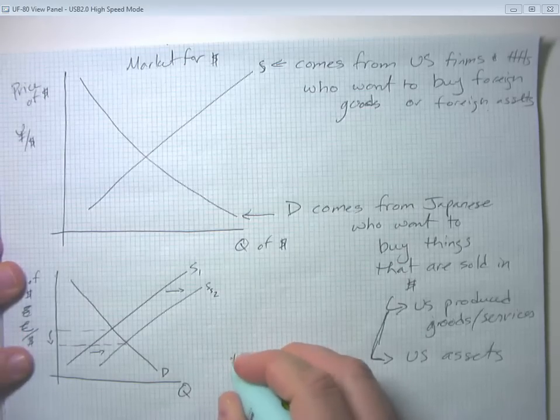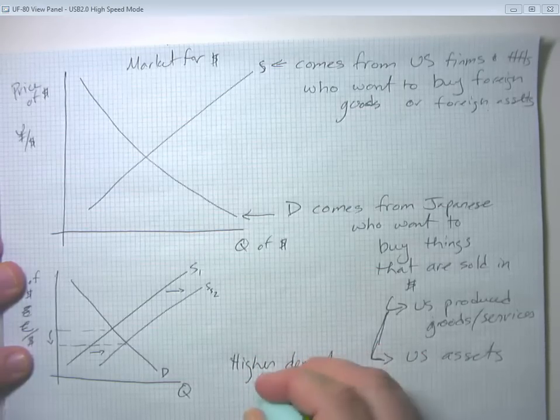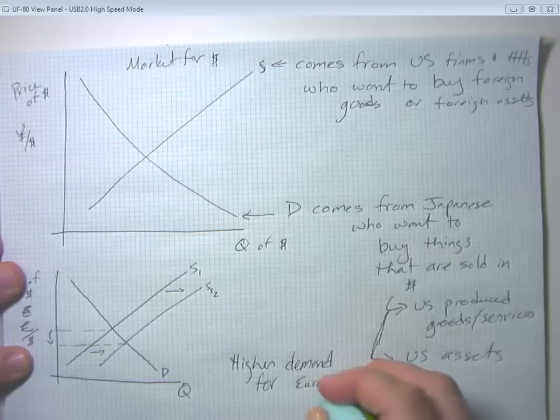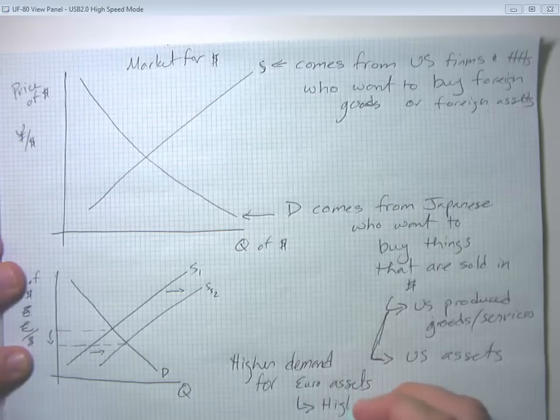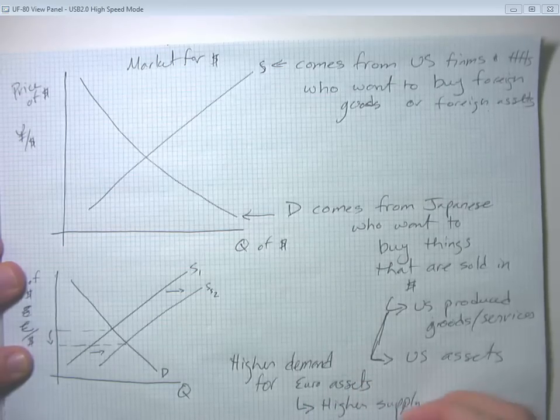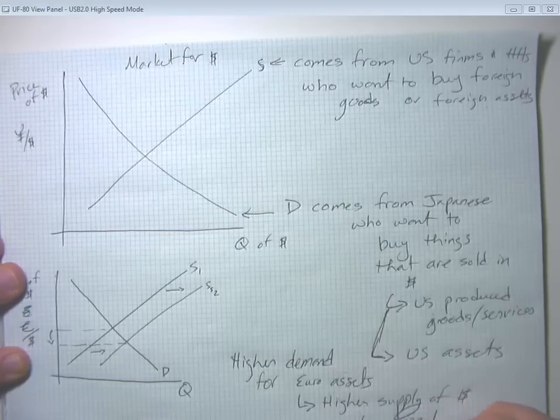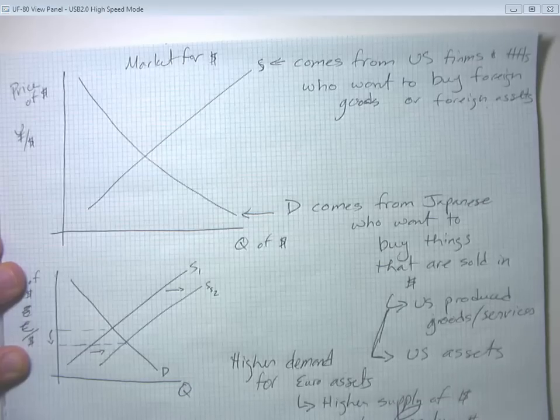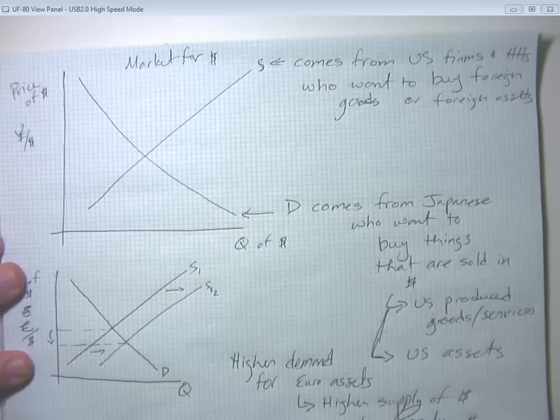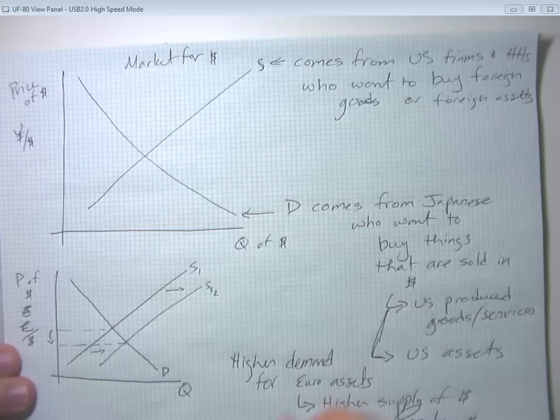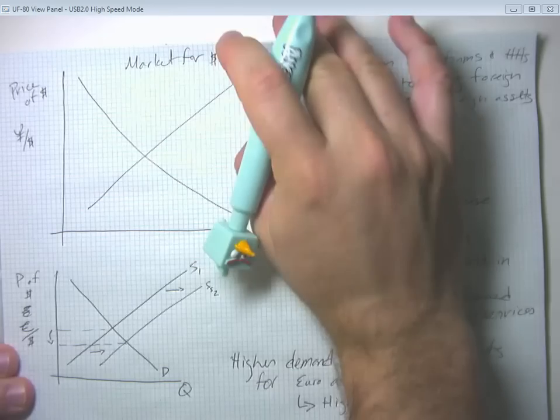So higher demand for euro assets means higher supply of dollars in exchange markets, which means weaker dollar. And then that would correspondingly affect net exports. In particular, this weaker dollar would eventually, we think, lead to higher net exports. So there's one example of that kind of market going on.